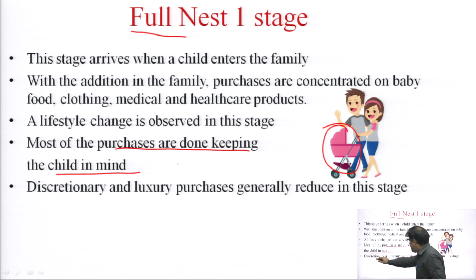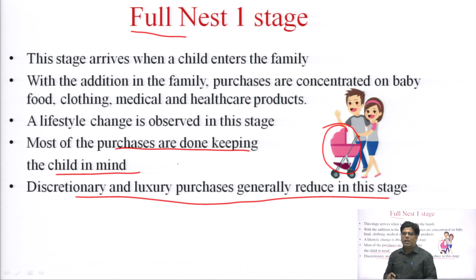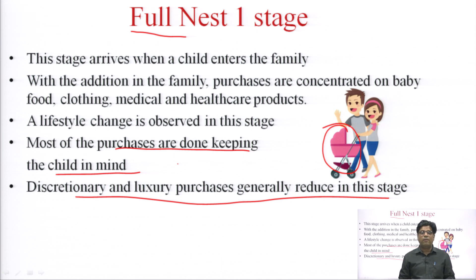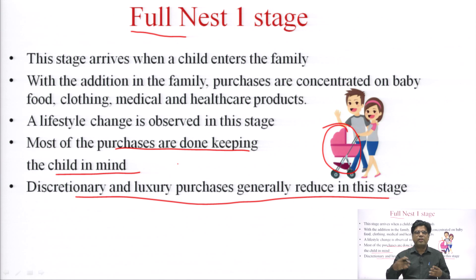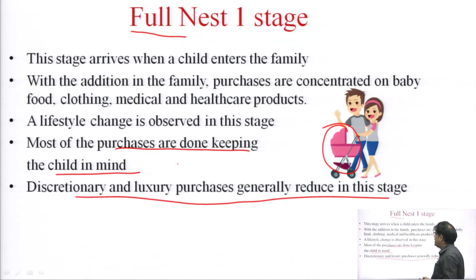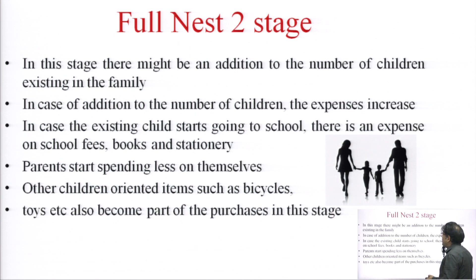Discretionary and luxury purchases generally reduce in this stage. The holidays, recreations, and vacation purchases that were common in the previous stage now reduce — the obvious reason being the responsibility and expenses of the child. Instead of a 15-day vacation, a couple may now settle for a movie or a short theater performance. Household expenses increase significantly, with many products and services purchased specifically for the baby.